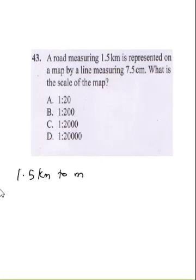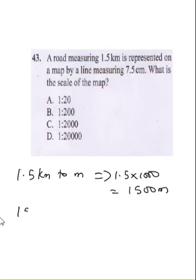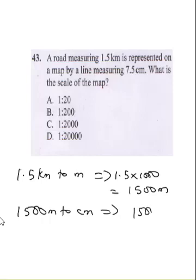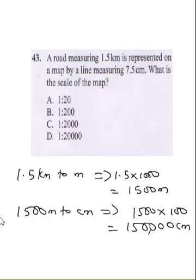First, convert 1.5 kilometers to meters: 1.5 times 1,000 gives us 1,500 meters. Then convert 1,500 meters to centimeters: 1,500 multiplied by 100 gives us 150,000 centimeters. Now we divide 150,000 by 7.5.